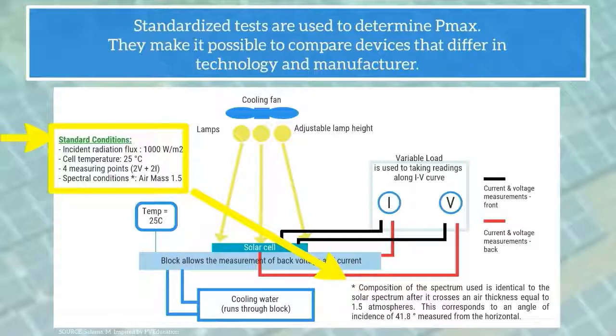This means that the composition of the spectrum used is identical to the solar spectrum after it crosses an air thickness equal to 1.5 atmospheres. This corresponds to an angle of incidence of 41.8 measured from the horizontal.